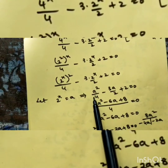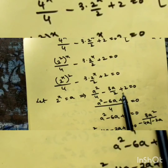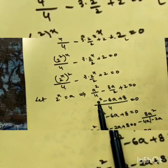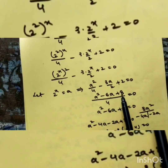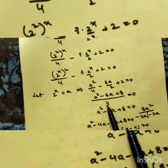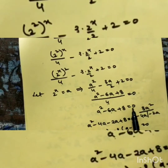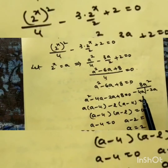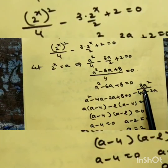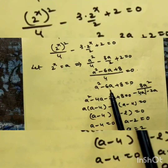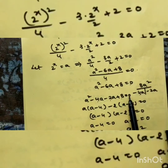Substituting, the equation becomes a²/4 - 3a/2 + 2 = 0. The LCM of the three terms is 4, giving a² - 6a + 8 = 0. This is the quadratic equation. To factor, multiply 8 with a² to get 8a², then split into two terms whose product is 8a² and sum is -6a.